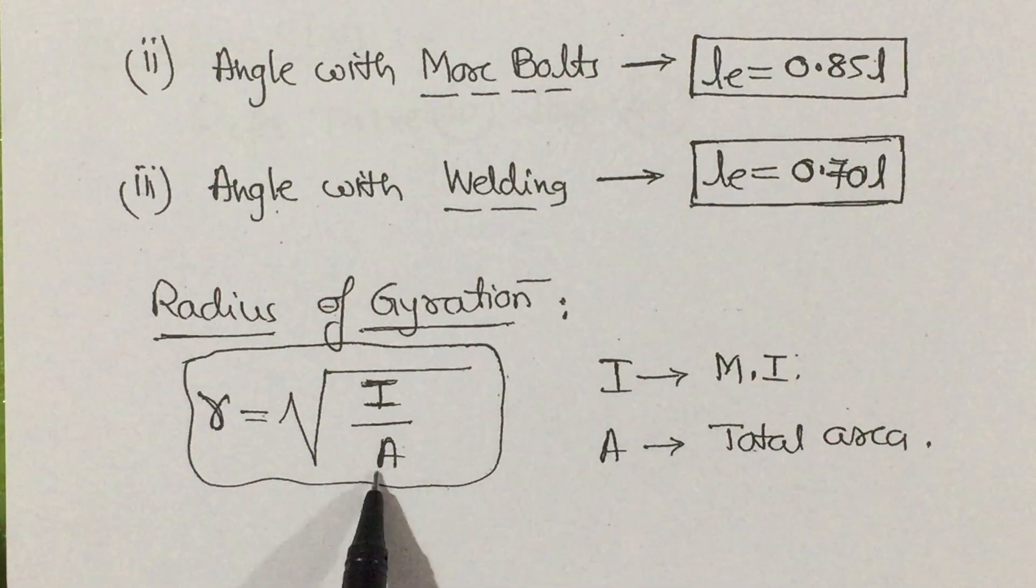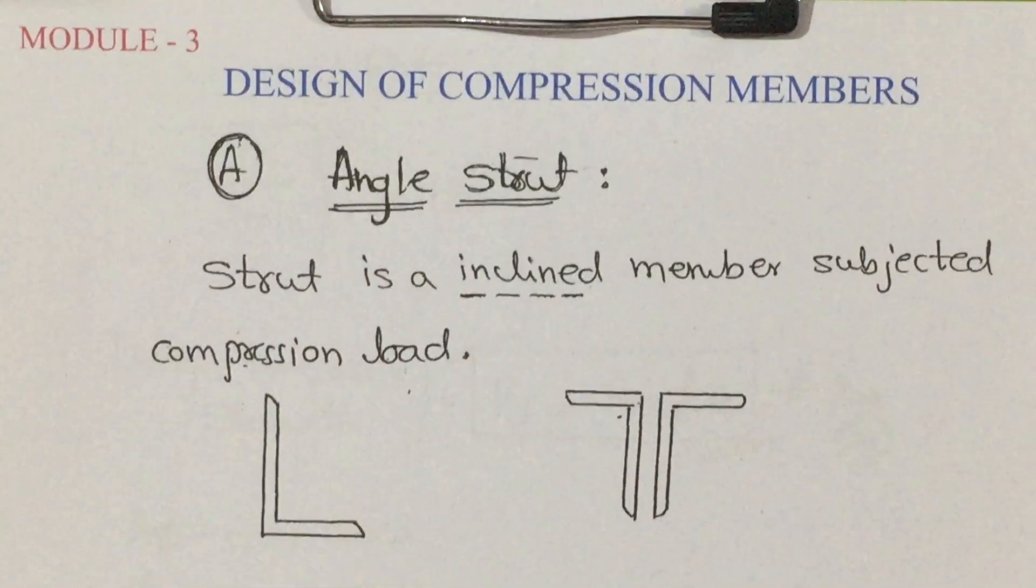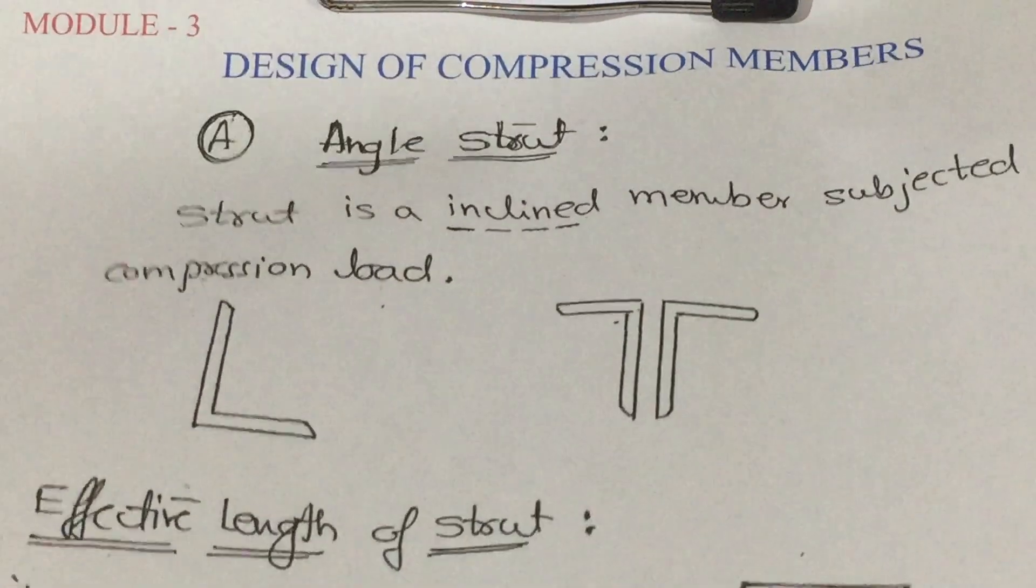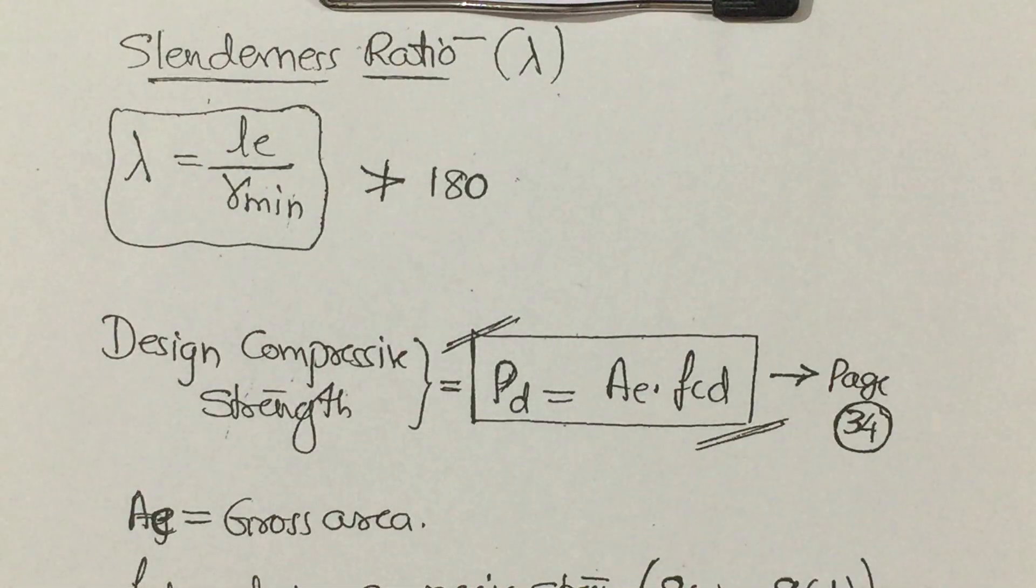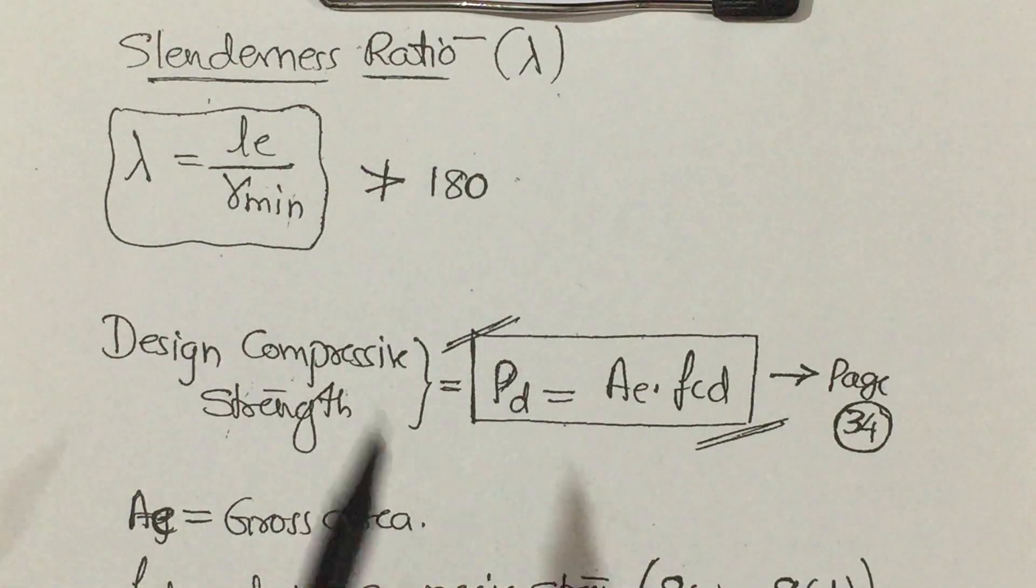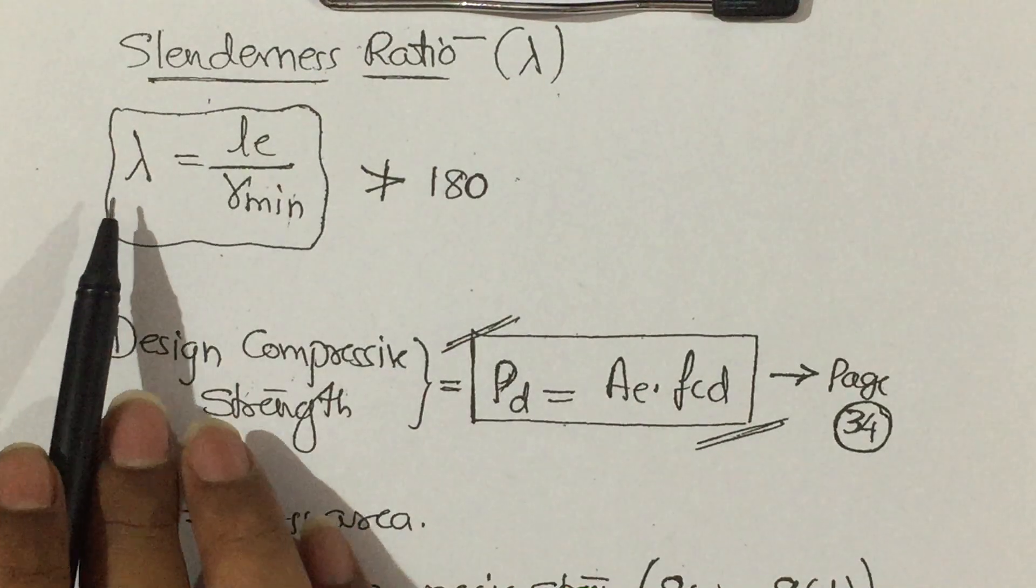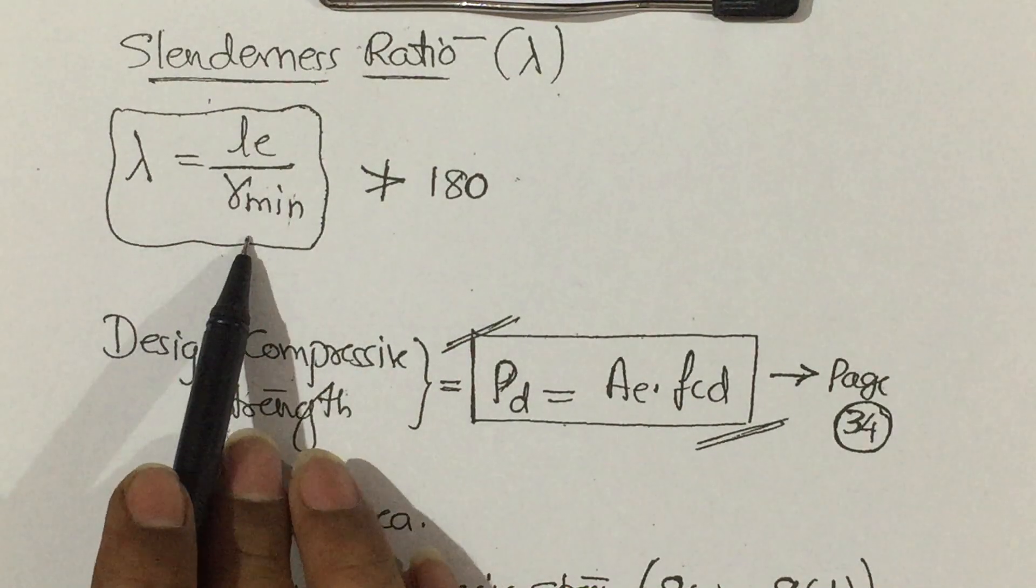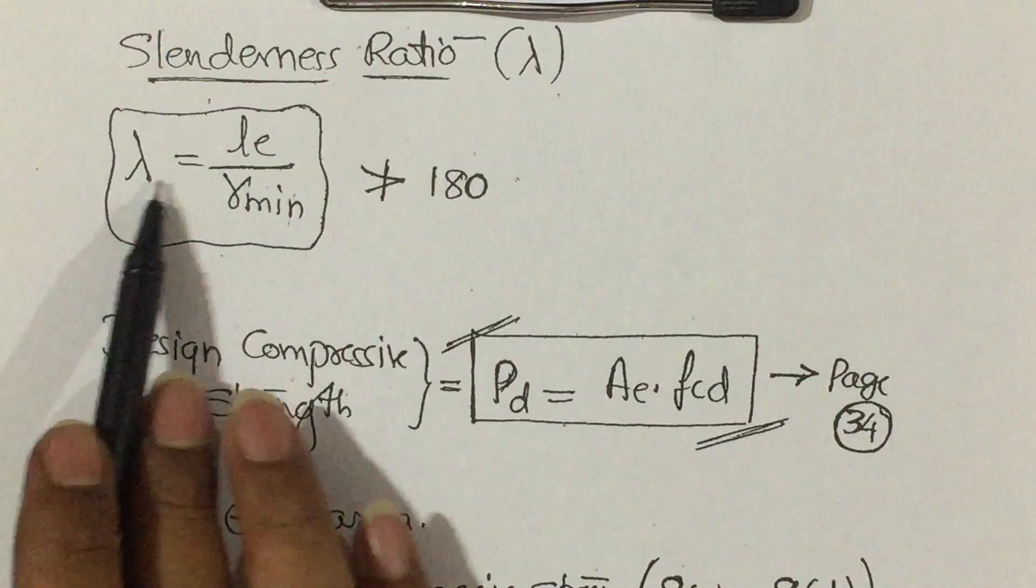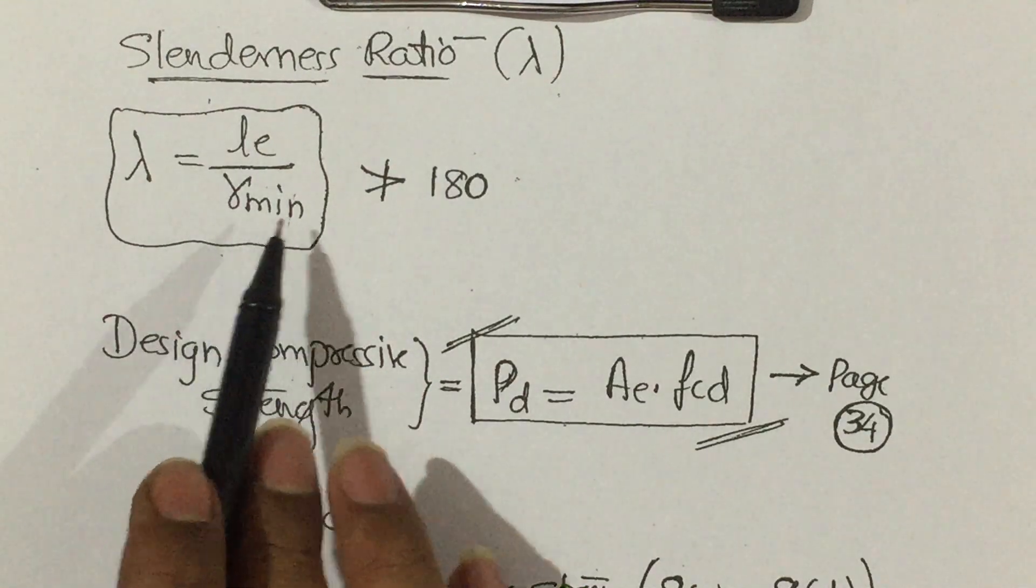Then slenderness ratio, denoted by lambda. Lambda is given by effective length by minimum radius of gyration. That is, lambda equals le by r minimum. It should not be greater than 180 as per the IS code book standards.